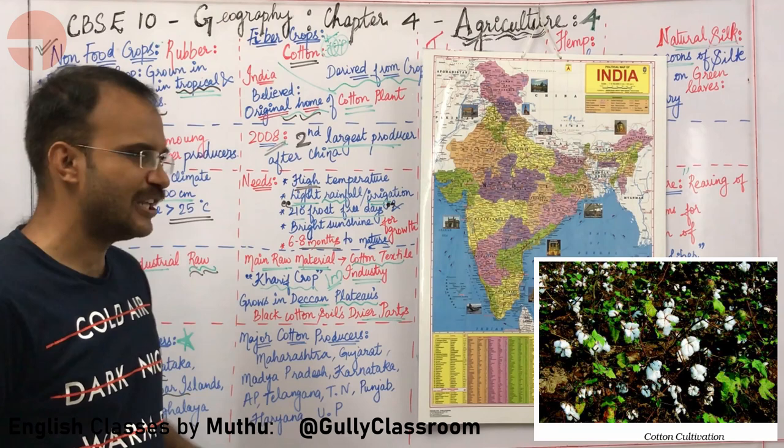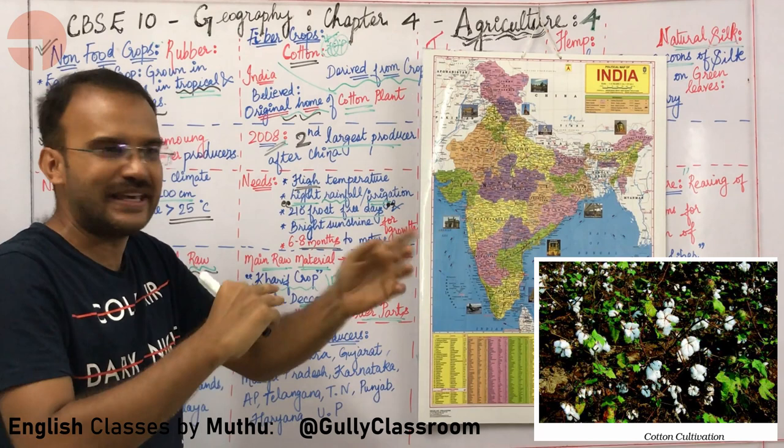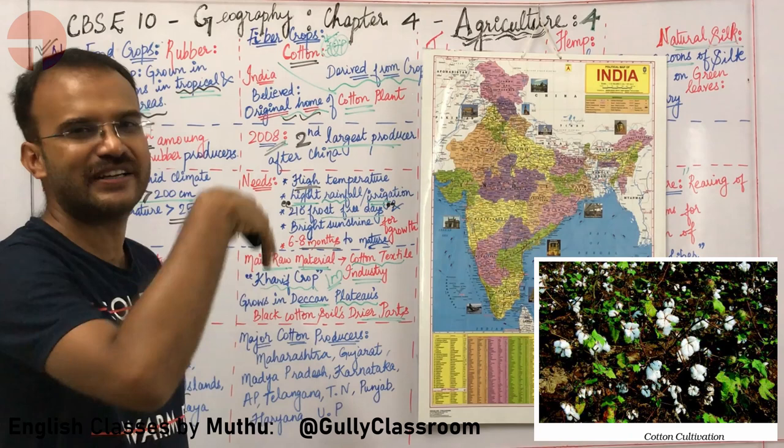A useful mnemonic: GK — groundnut is a kharif crop. CK — cotton is a kharif crop. Another mnemonic already studied: mustard is a rabi crop.